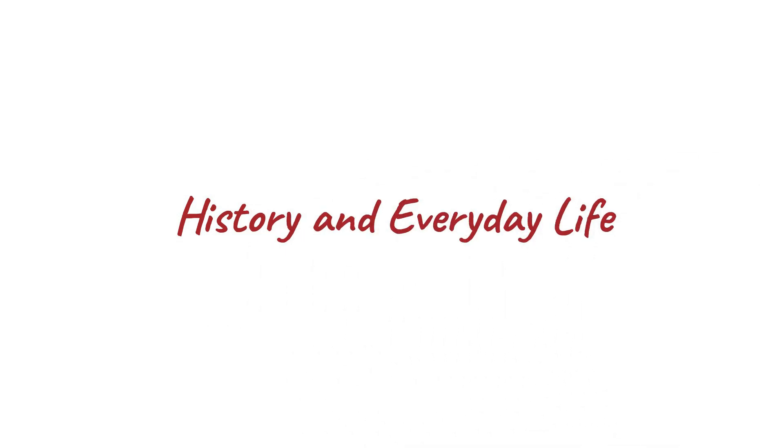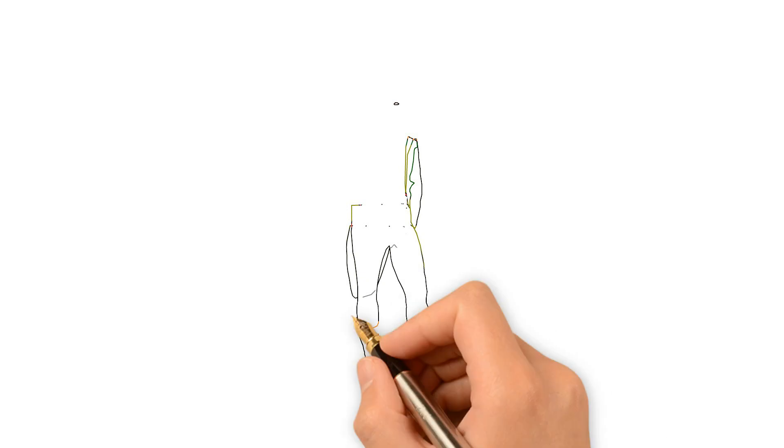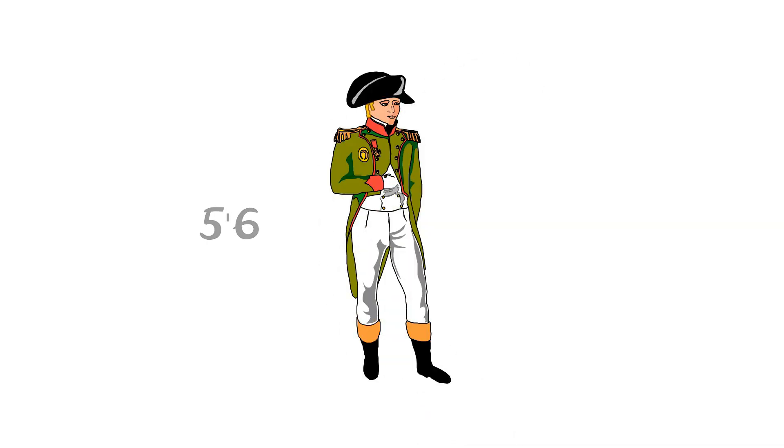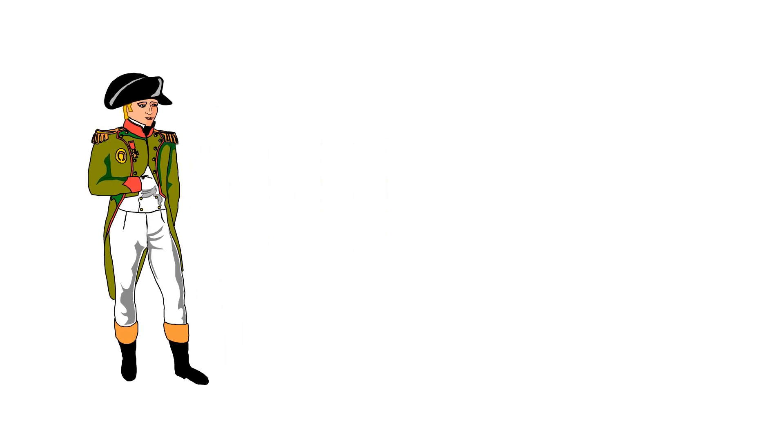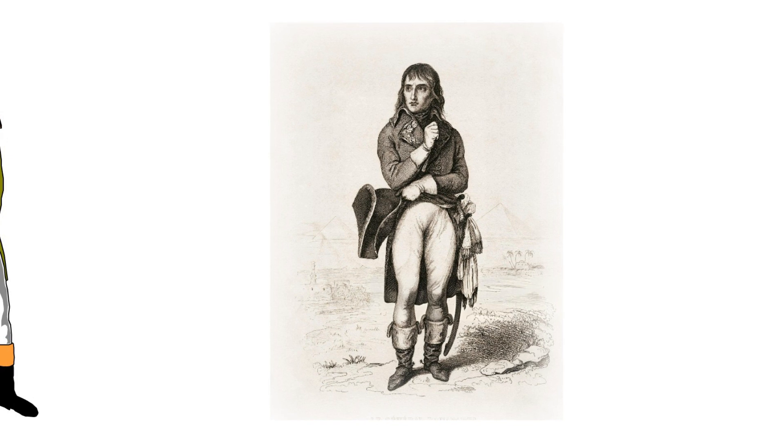History and Everyday Life: Napoleon Bonaparte was short. Average height for his time, Napoleon was likely around 5 feet and 6 inches, which wouldn't be considered short today. Portraits by British propagandists often depicted him as shorter than he actually was.